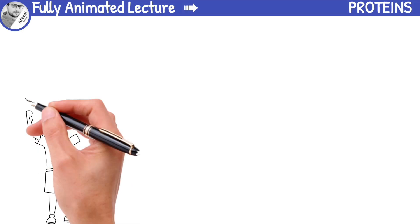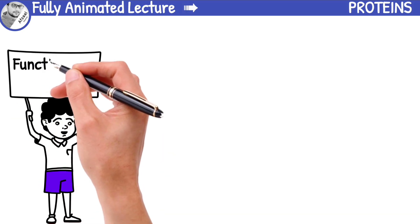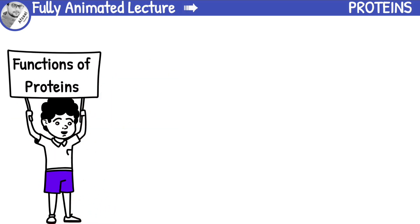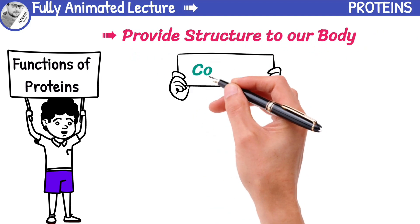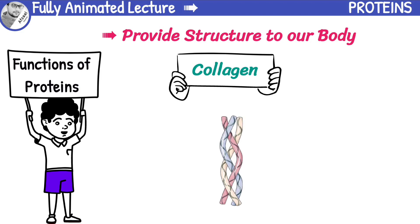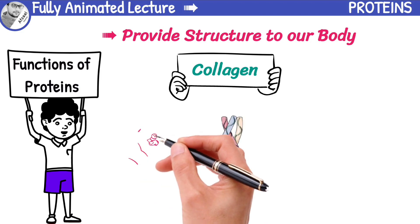Now we are going to talk about function of proteins in our body. One of the main functions of proteins is to provide structure to our body. Collagen is a protein found in our skin, bones, muscles,